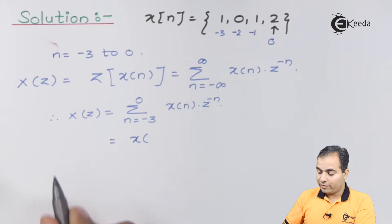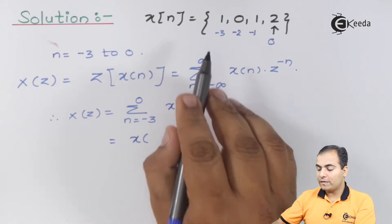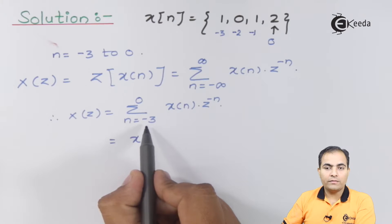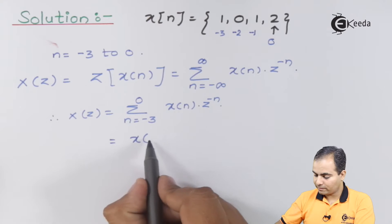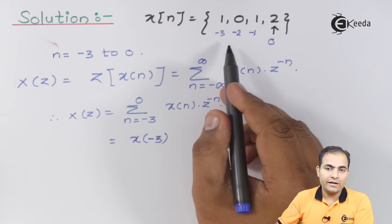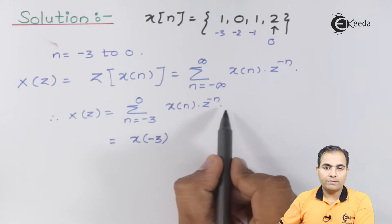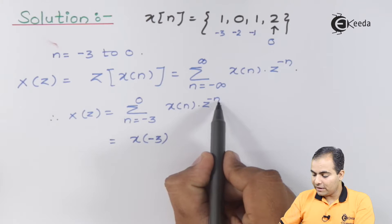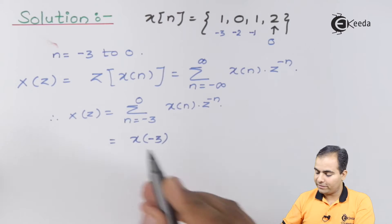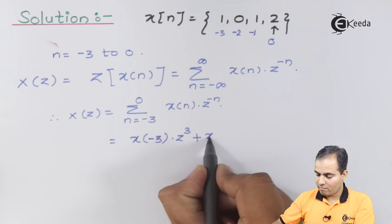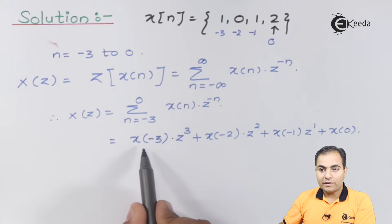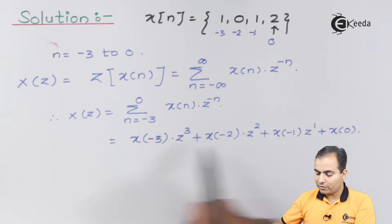We always substitute the lowest value first and then the highest value, so minus three comes first and zero comes last. Since all sample values are at negative indices, the powers of z will be positive — because n is negative, the minus sign cancels to give a positive exponent. We now substitute values of x[−3], x[−2], x[−1], and x[0] into the formula.